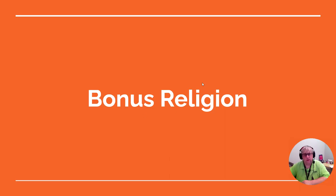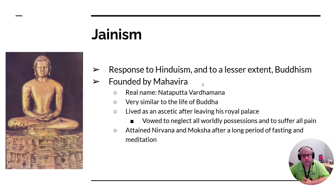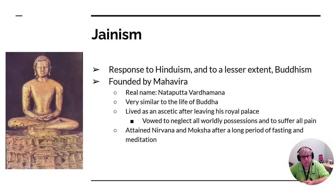There is one other religion involved here, and that is Jainism. Jainism is kind of like a middle ground between Hinduism and Buddhism. Mahavira is their version of the Buddha — he lived in a royal palace wanting nothing growing up, but when he grew up he realized the world is full of suffering. He gave up all his worldly possessions and went to meditate much like the Buddha did. Mahavira attained moksha and nirvana after a long period — approximately 22 years of fasting and meditating.